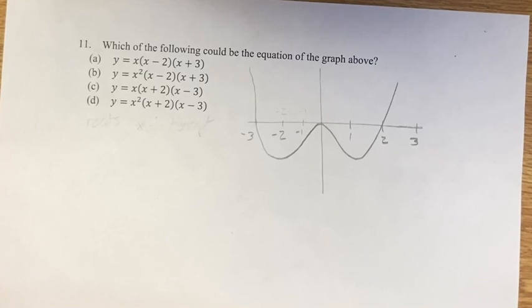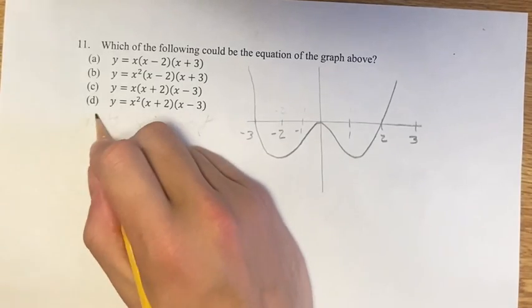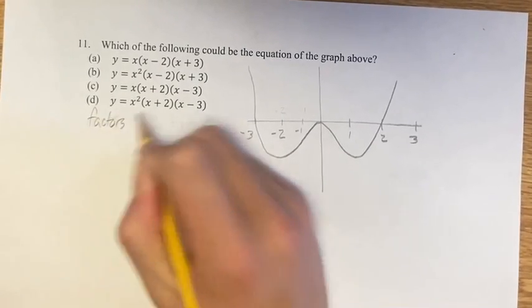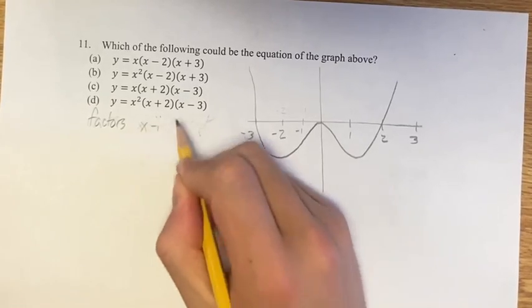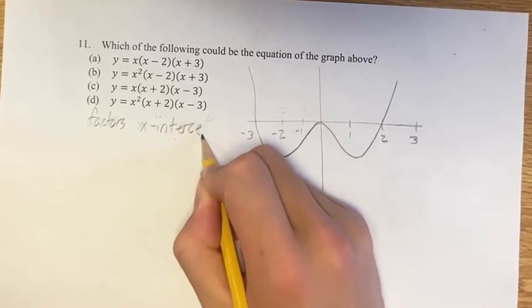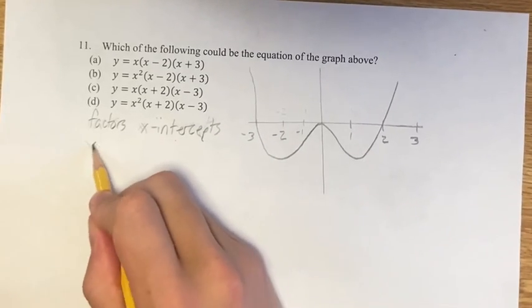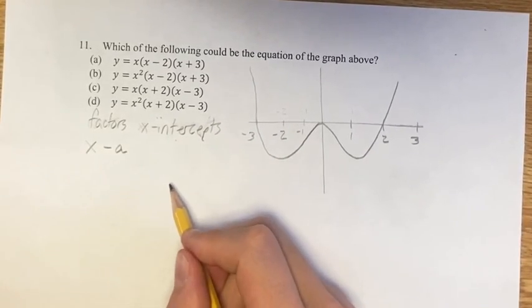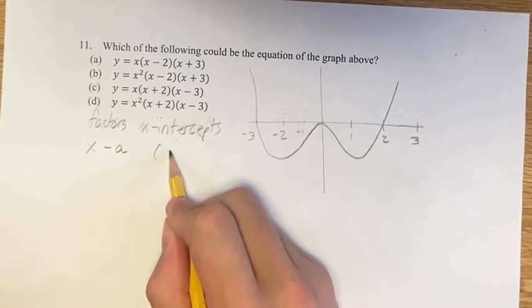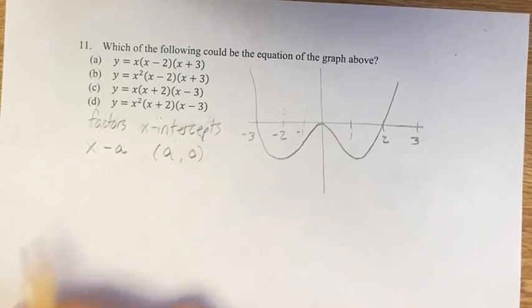So the way we're going to do this is we're going to use the relationship between the factors of the equation and the x-intercepts of the function of the graph. So if you have a factor of x minus a, then your x-intercept is going to be a,0, where a is just some number.